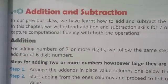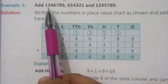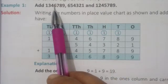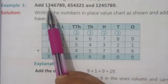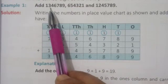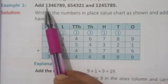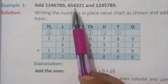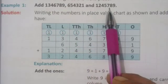So first of all, there are 3 numbers. The 1st number is a 7-digit number, the 2nd is a 6-digit number, and the 3rd is also a 7-digit number. The numbers are 30,46,786 and 6,54,321 and 12,45,789.